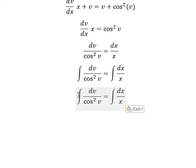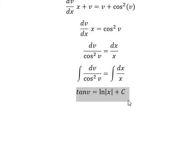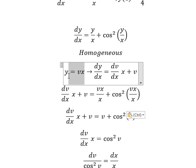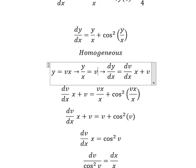Next we integrate both sides. This gives us tan v equals ln of the absolute value of x plus C. Since v equals y over x, we can write tan of y over x equals ln of absolute value of x plus C.